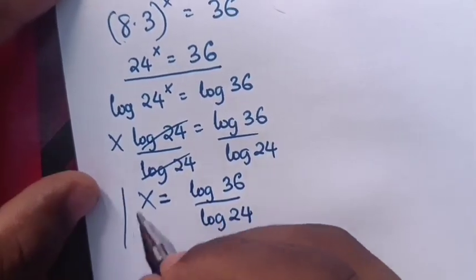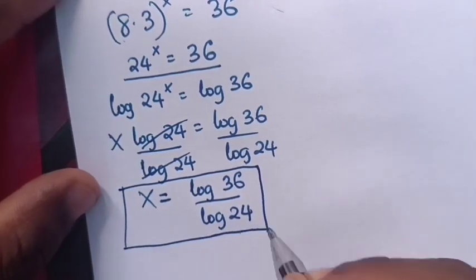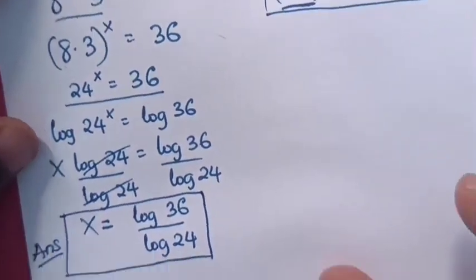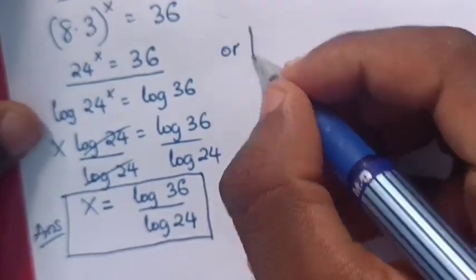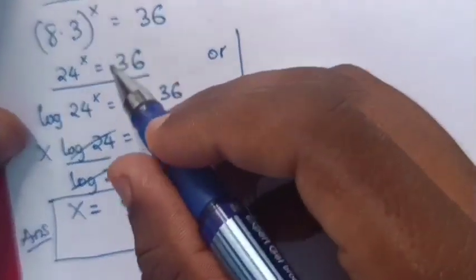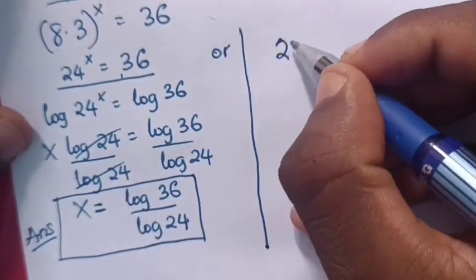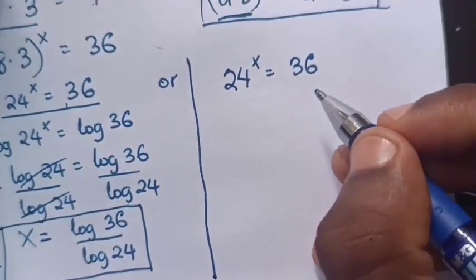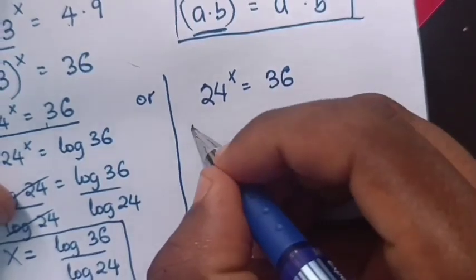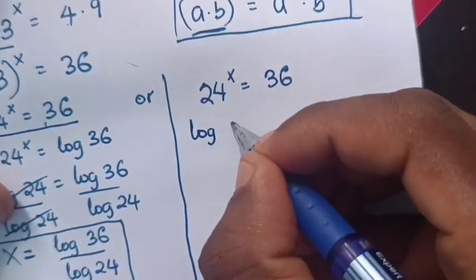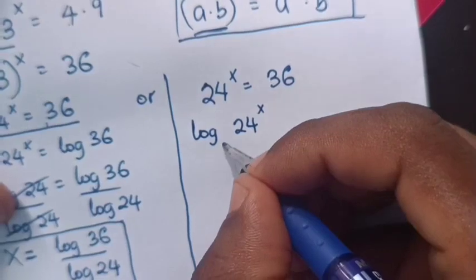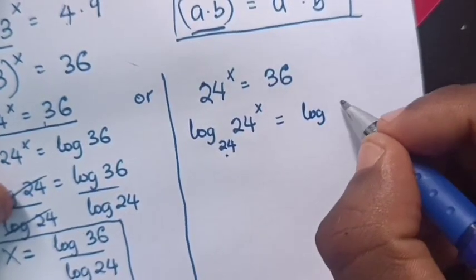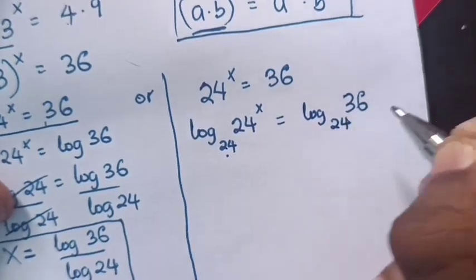So this is the answer for the value of x. Alternatively, we can use this solution from 24 power x is equals to 36 — we apply log of base 24 in both sides. So it will be log base 24 of 24 power x is equals to log base 24 of 36.